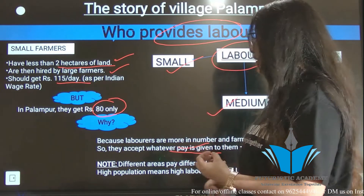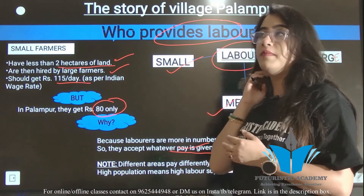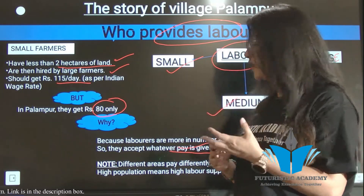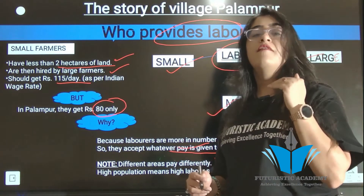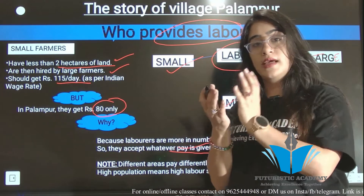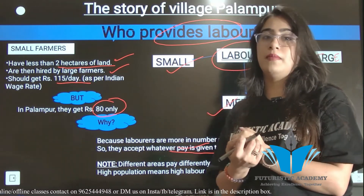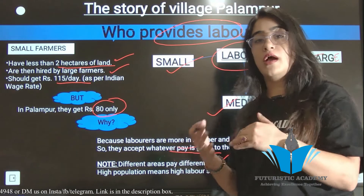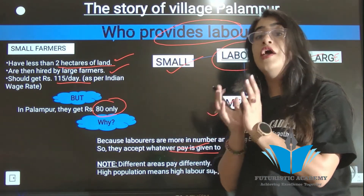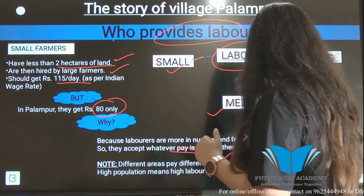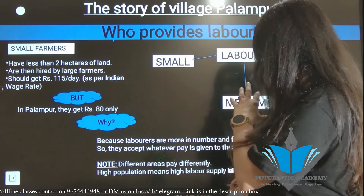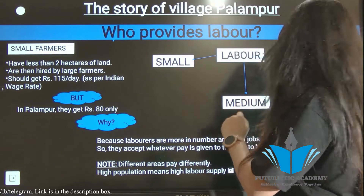Different areas in India pay differently. Where the population is higher, labor supply is greater. When labor is more and jobs are fewer, workers can easily be replaced and wages automatically go lower. Conversely, where population is less and labor is scarce, wages are higher. Simply put: high population means high labor supply, which means low wages.